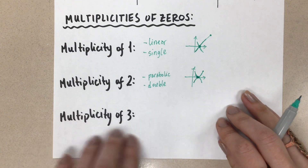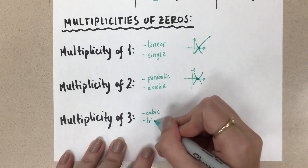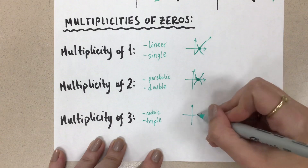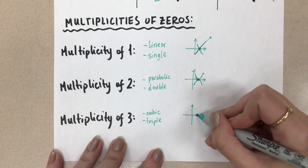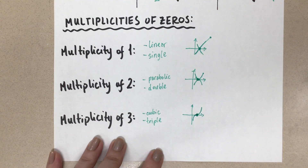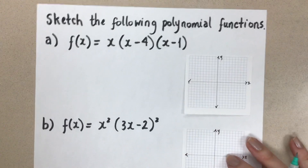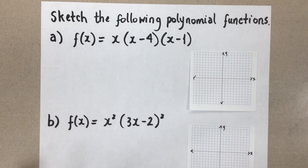The last multiplicity we'll cover is three — called a cubic zero or triple zero. When we have a multiplicity-of-three zero on the graph, the function goes through that zero at an inflection point, creating that characteristic S-shaped curve. It can happen in either orientation. Now let's go back to the examples to put all of this together and do rough sketches, looking at end behaviors, zeros, and the behavior of the function at those zeros.